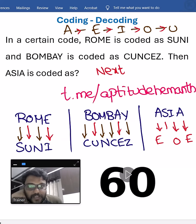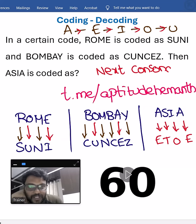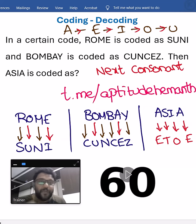For consonants, the next consonant is used — so the next consonant here is T. The rule is: for consonants use the next consonant, for vowels use the next vowel. That is the logic. Good question — hope you people learned something. Thank you.